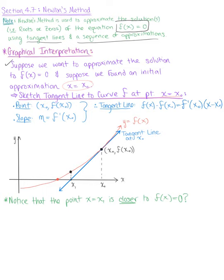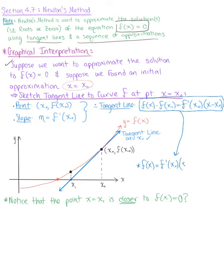We can solve for the tangent line by solving for f(x). The tangent line — shown as the blue graph here — is defined by the formula f(x) = f′(x₀) · (x − x₀) + f(x₀). We sketch this tangent line to the curve at the point x₀.